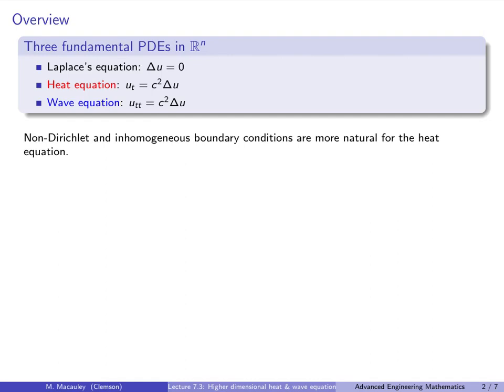You can certainly have different boundary conditions — Dirichlet, Neumann, mixed, etc. — on both the heat and the wave equation, and also homogeneous and inhomogeneous boundary conditions on these. But I'm going to argue that at least when you're starting out, it's more natural to have unusual boundary conditions on the heat equation than the wave equation.